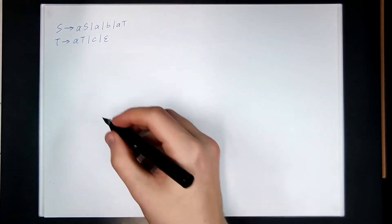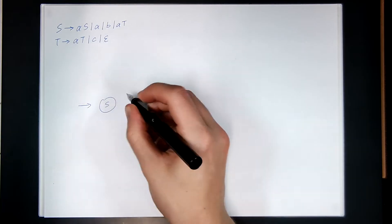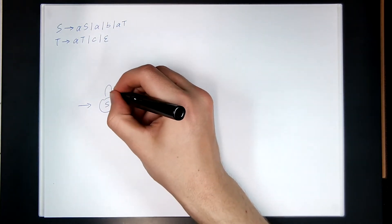So implicitly, S is the start symbol, so we'll include a state for S. S can go to AS, so I can read an A and get back to myself.